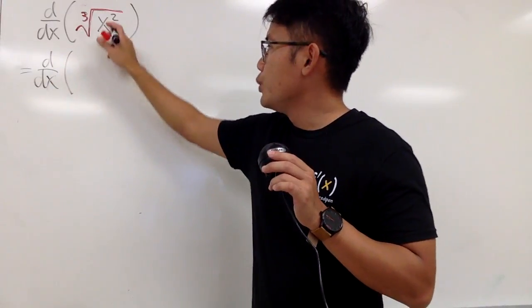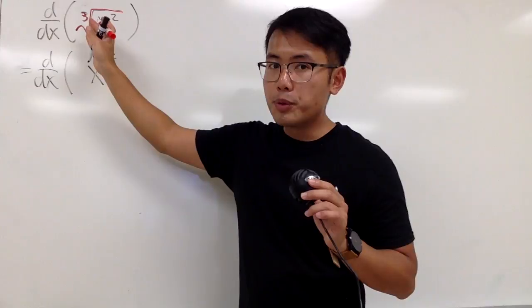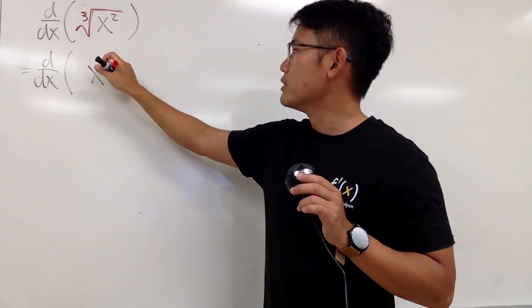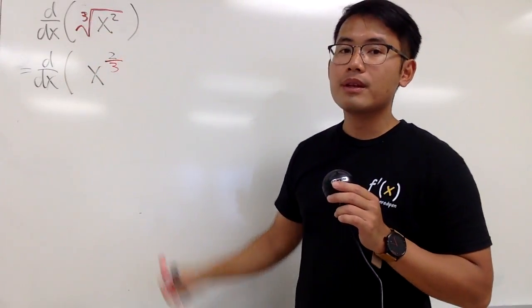And inside here, we will have the x squared, and the cube root is the third power. So I'll just put this down, right? 2 over 3 power.